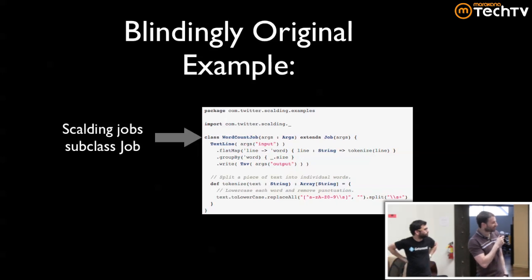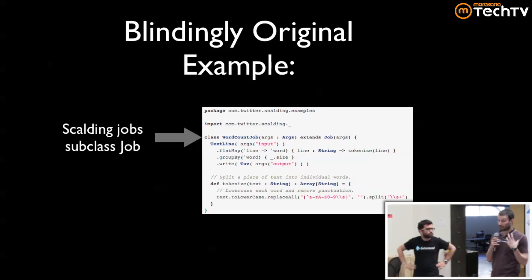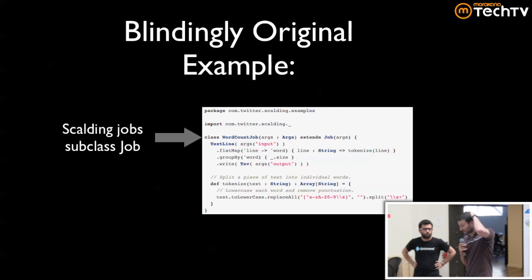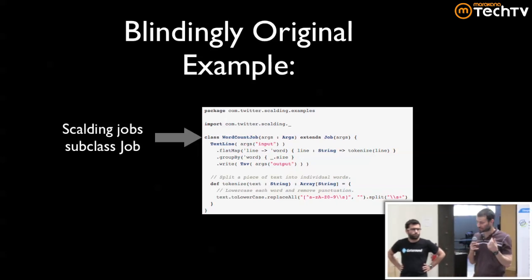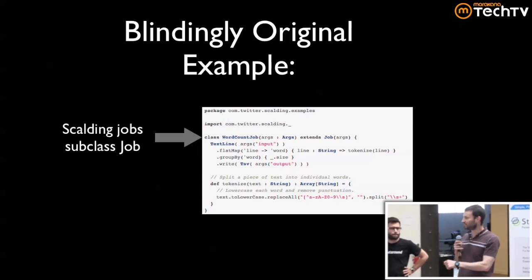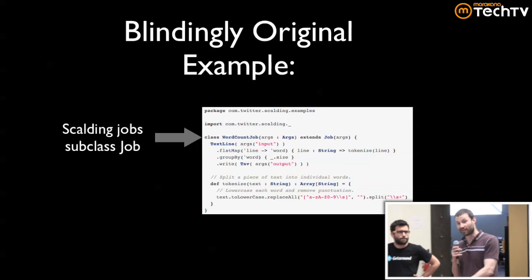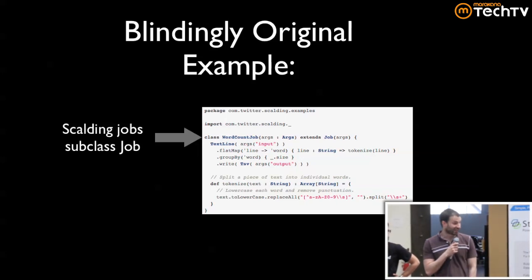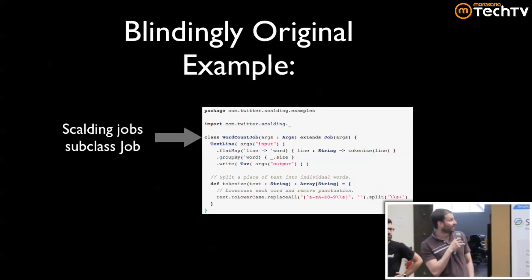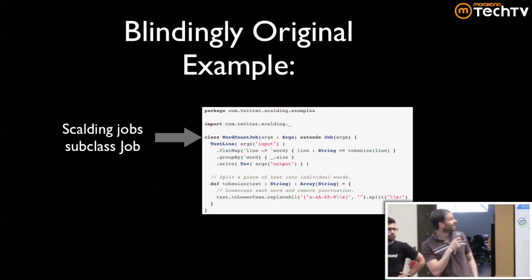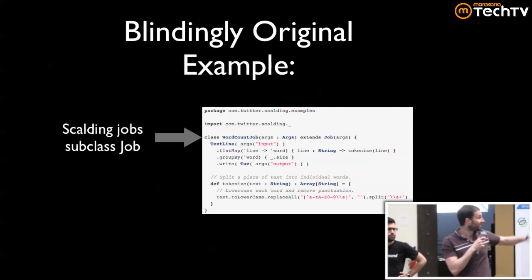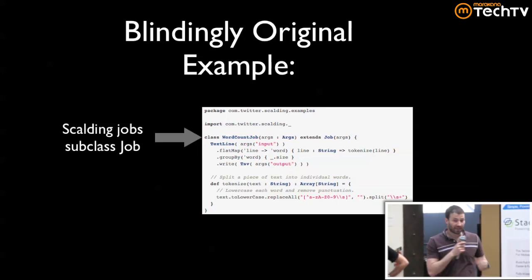So this is what Scalding looks like. Scalding came about because Avi Bryant — who is now moving to Etsy and will be bringing Scalding there — they use Ruby and Cascading now; they don't use Scalding yet as far as I know. But he didn't really want to write Pig anymore.